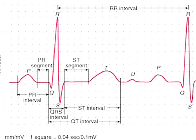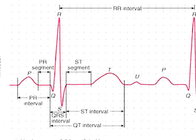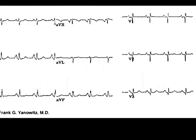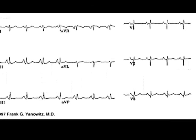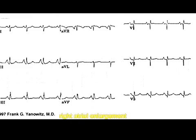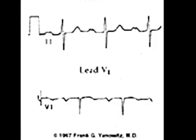Now let us review some of the most important EKGs. Here you can see a big P wave. This is very common in right atrial enlargement — because the atria is big, the P wave will be big. In left atrial enlargement, you can see a notched P wave or M-shaped P wave, as seen here. This is characteristic of left atrial enlargement.